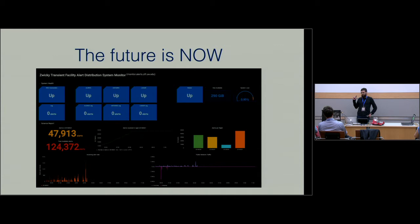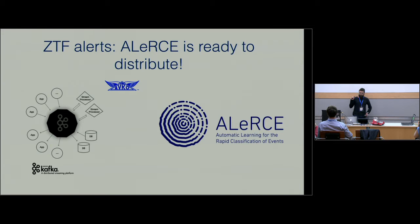Now the problem is that the future is now. ZTF is currently observing. You can see this screenshot of the monitor from ZTF and you can see here's ALERCE. We are not producing any alerts right now, so that's a problem for us. But the ALERCE system is ready to distribute. We are capable now to redistribute the alerts. That doesn't mean that we're able to classify them. We're able to distribute them.